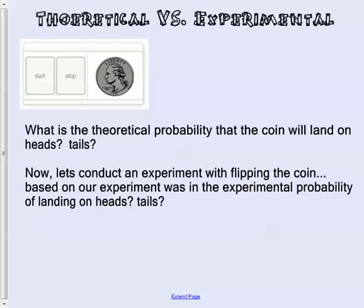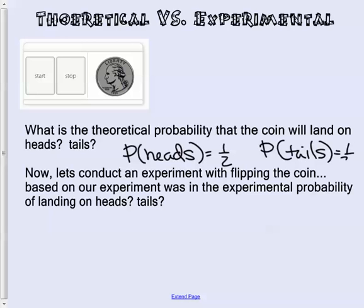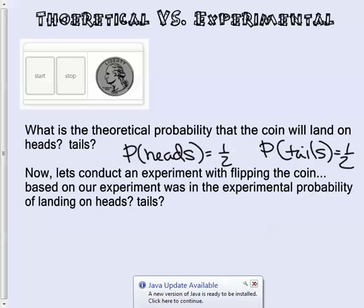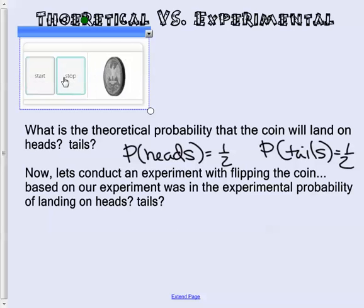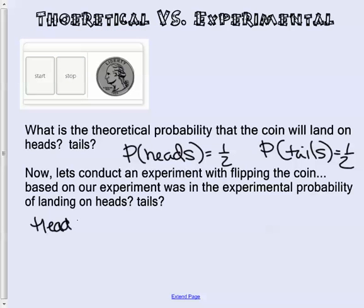So if we look at this, what is the theoretical probability that the coin is going to land on heads? So the probability of heads would be one half. Same with the probability of tails, it would also be one half. This is what we think should happen when we flip a coin. If we actually conduct the experiment, for example, flip this coin and stop it. It landed on heads once.